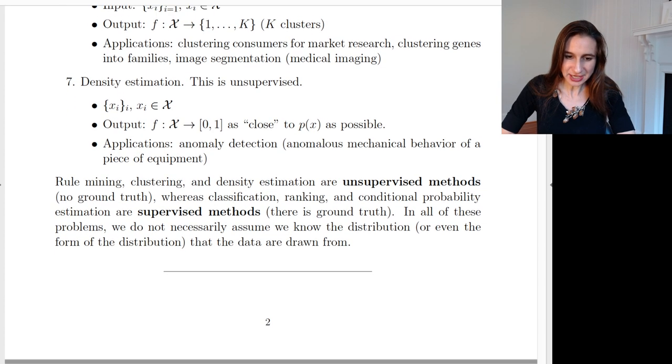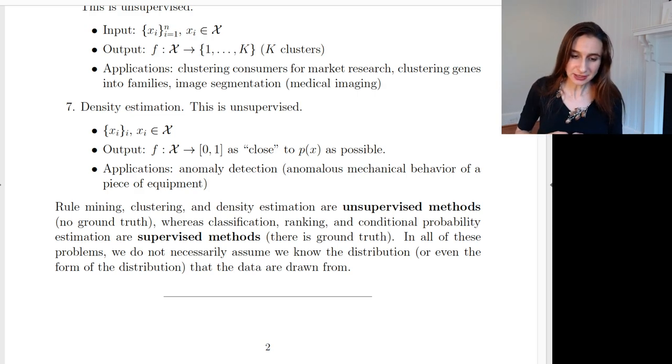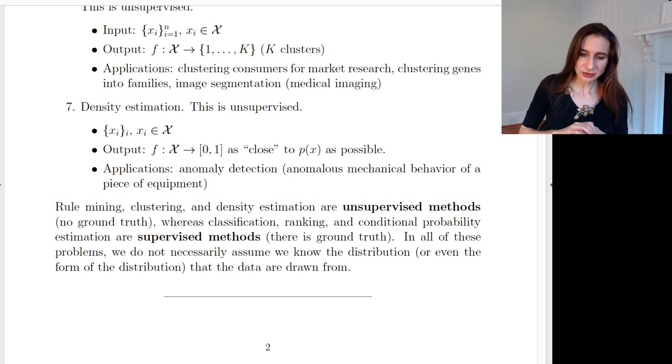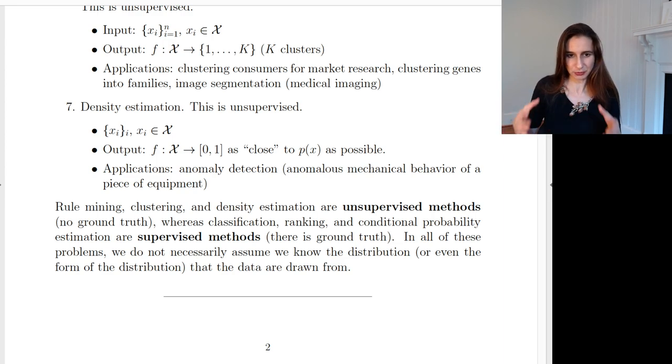Density estimation is the last problem I'm going to talk about, which is also unsupervised. In density estimation, again you have no labels, that's what it means to be unsupervised where there's no labels for supervision. You just have the data and your goal is to create a function that tells you how popular each point in the feature space is. Your goal is to create a function F that's as close as possible to the density of X at each point. If a particular value of X is very uncommon, then the density should be very close to zero. On the other hand, if a particular feature vector is very common, then your density would be high. I've given an example of anomaly detection, anomalous mechanical behavior of a piece of equipment. If your equipment is operating normally, then its feature vector should be in a part of the space that's relatively common. Whereas if the machine is behaving anomalously, then the density in that part of the feature space should be kind of close to zero.